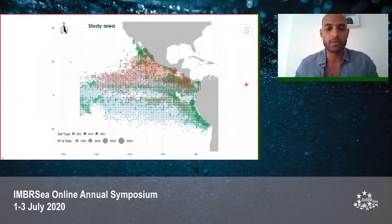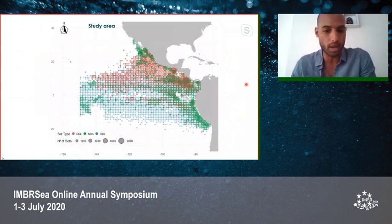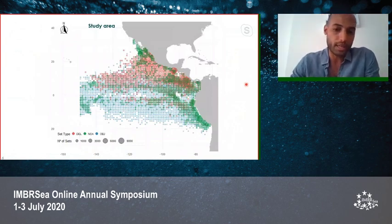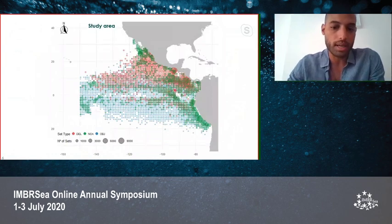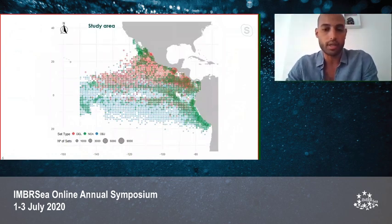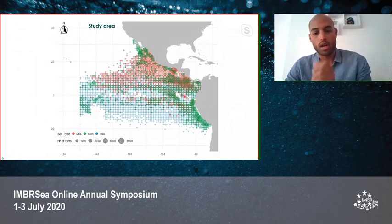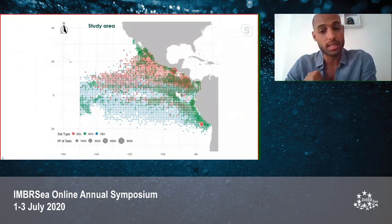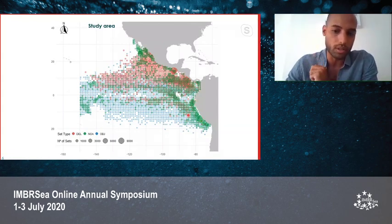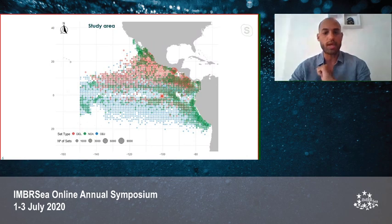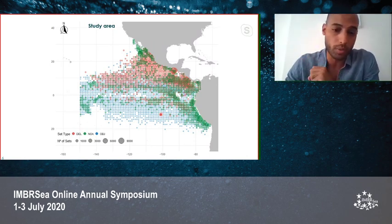The observer data shows the billfish bycatch divided by set types. Dolphin sets, shown in red, occur mainly in the northern part and along the coasts of Central America and Mexico. Non-associated set types occur mainly in coastal areas along the region, while object sets are well distributed across the whole Eastern Pacific Ocean.